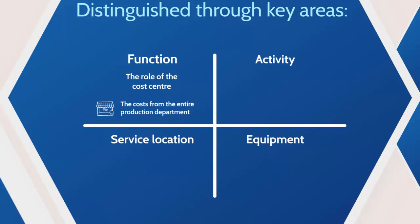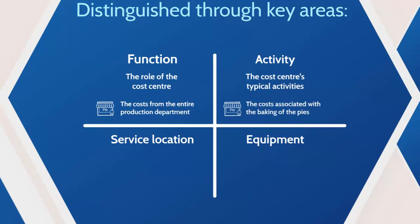An activity cost center is where costs associated with a specific activity are grouped together. Taking the production department — rather than having a whole lump of costs — the pie shop might want to break this down into individual activities. So the making of the pies would be one cost center, and the baking of the pies would be another. It's the specific activity that determines which costs are included.